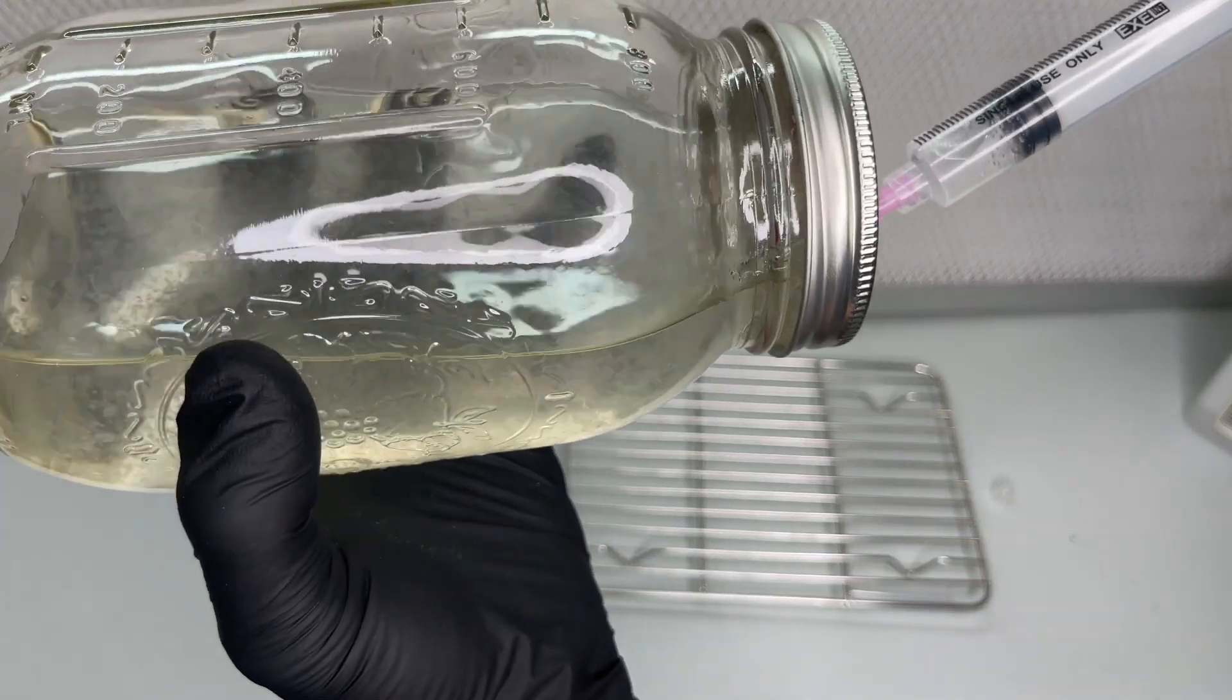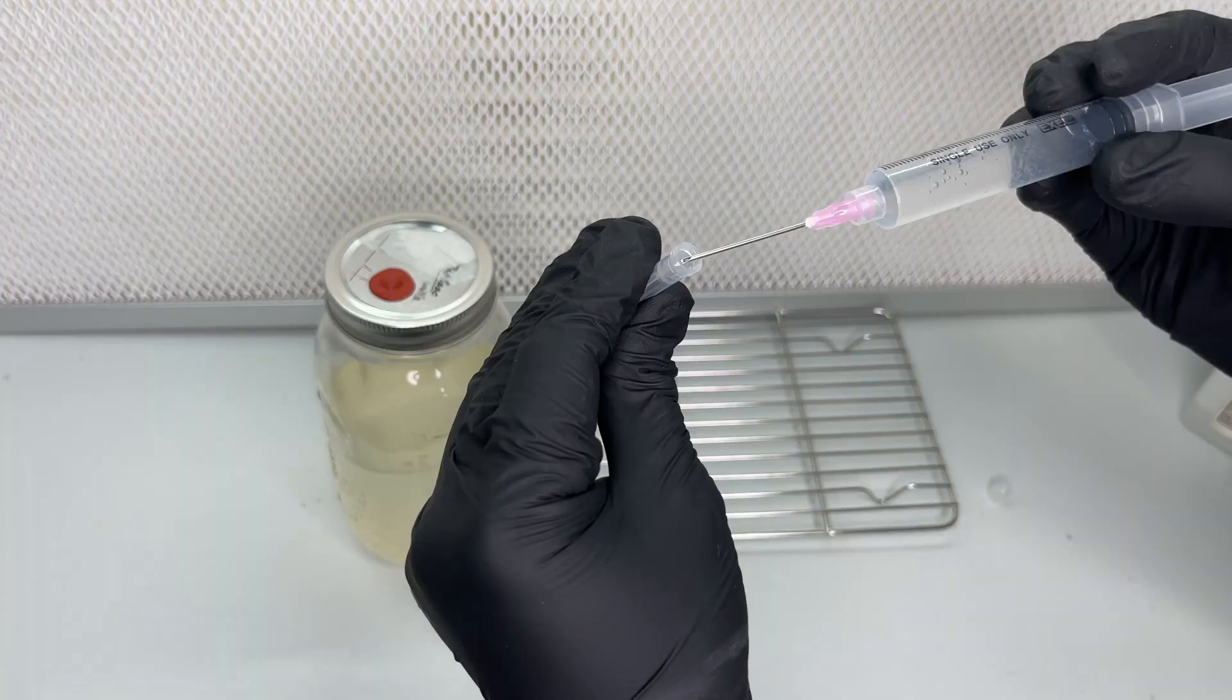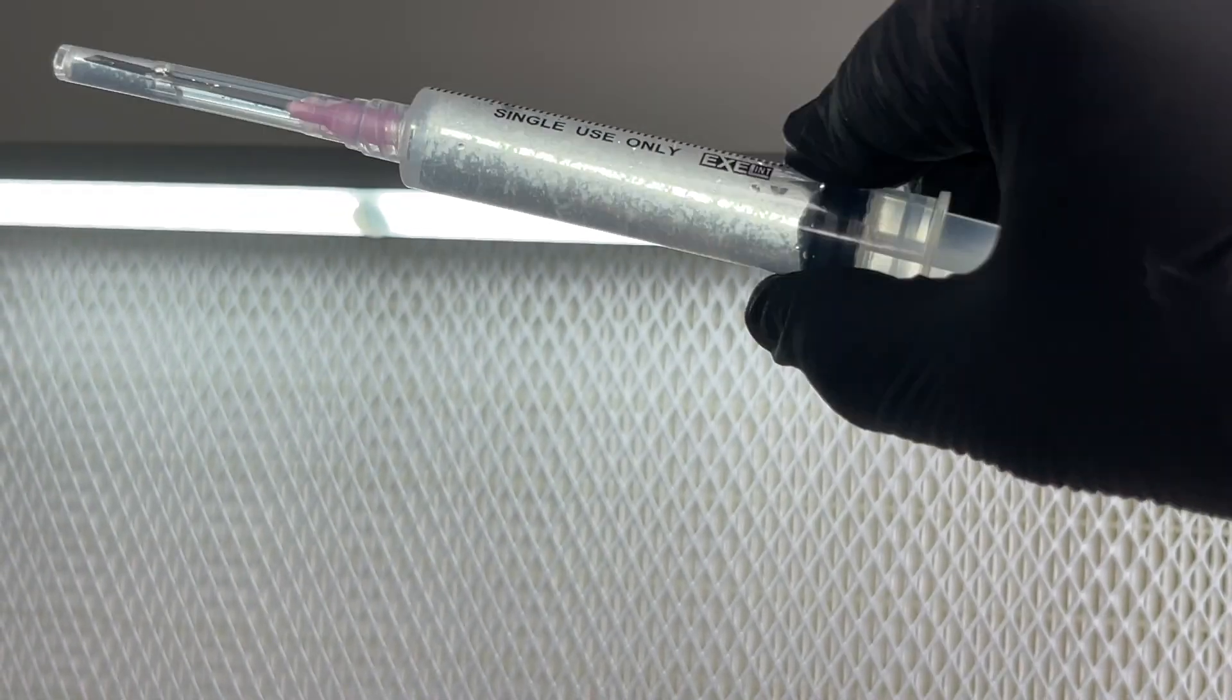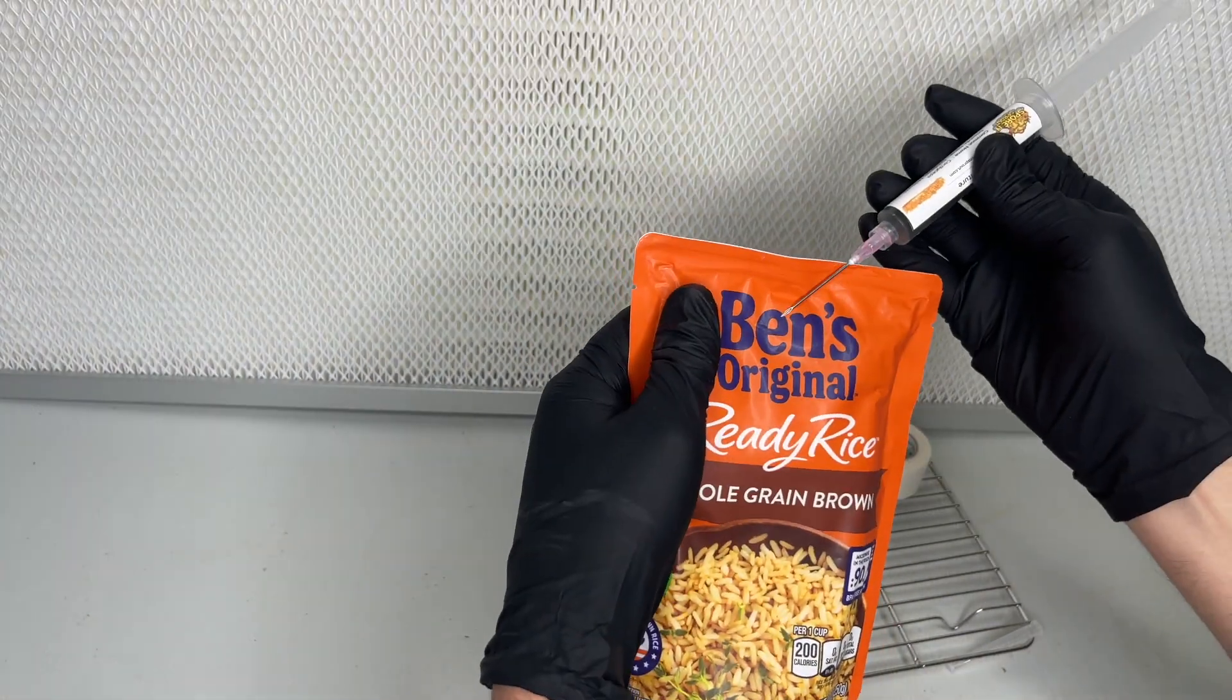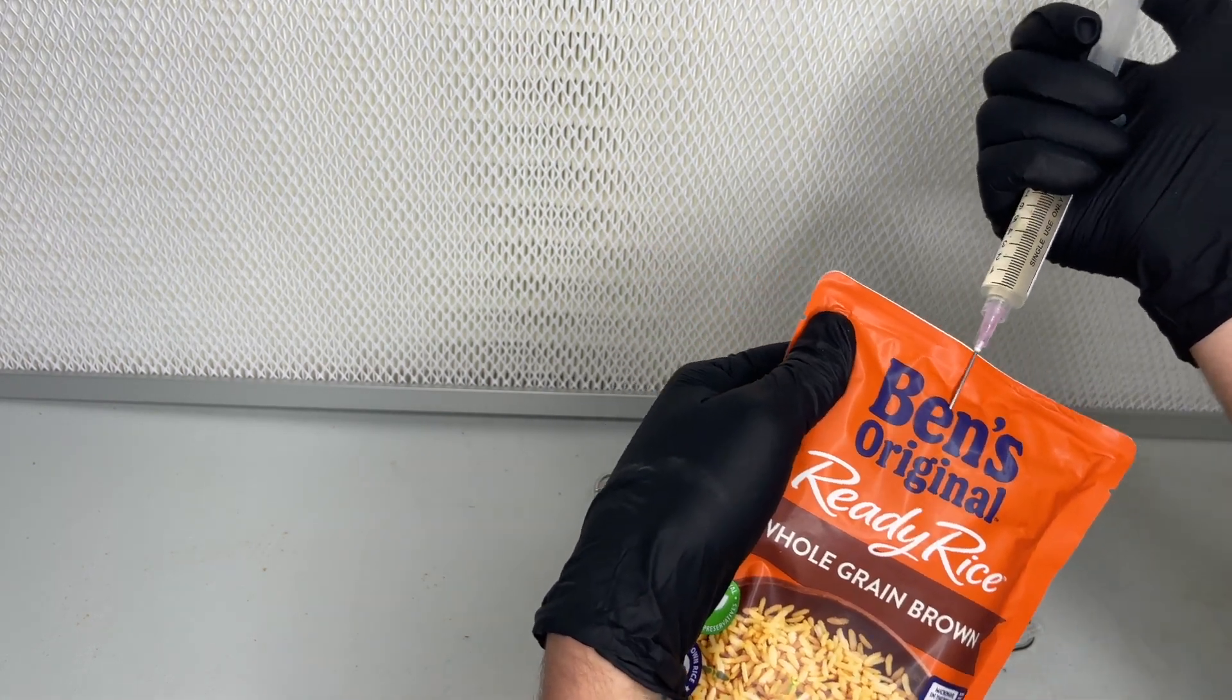Here I am using a sterile syringe to extract some liquid culture to grow some cordyceps. For most species I use 2 milliliters but for cordyceps I use 10 milliliters.